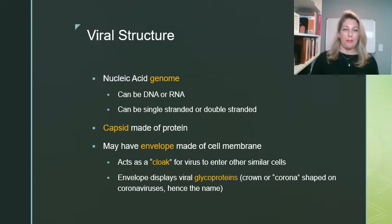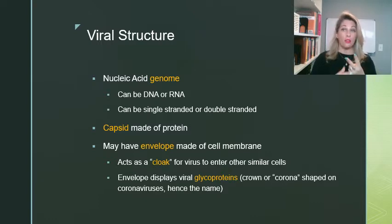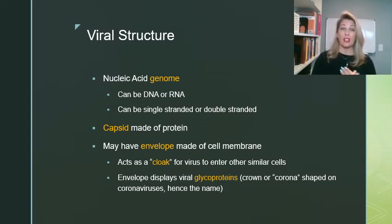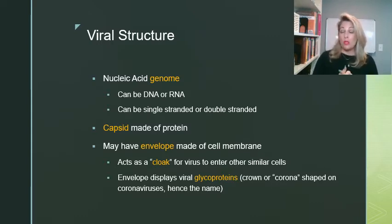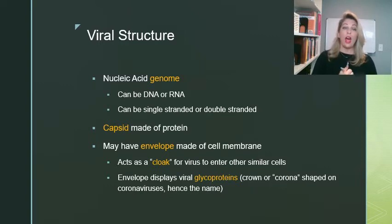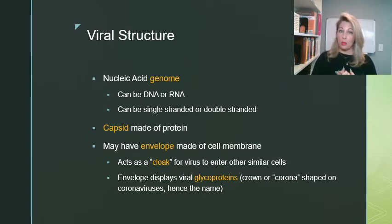So what is a virus made of anyway? They're actually really simple — they have two components for sure and sometimes a third. The first component a virus has to have is a nucleic acid genome, which is basically the instructions for the virus to do what it does. That nucleic acid genome can be made of DNA or RNA, and it can be single stranded or double stranded.